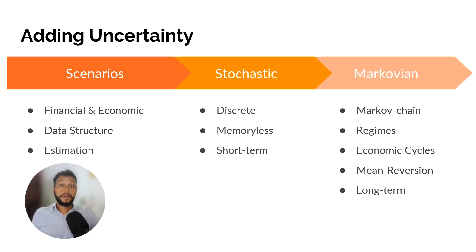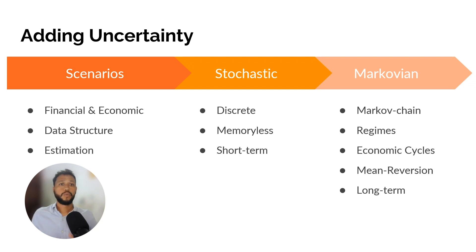In this chapter, we're going to dive into the world of uncertainty. Given the unpredictable business landscape, it is crucial to consider uncertainty when making decisions. We're going to explore the structure and estimation of economic and financial scenarios that allow us to incorporate uncertainty into our balance sheet projections. We'll show two strategies to program uncertainty into our model: first, the memoryless approach, which works great for short-term projections; then, the Markov switching approach, which can handle the notion of economic cycles and is especially suited for medium and long-term projections.